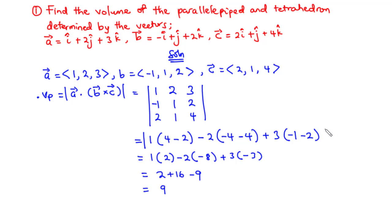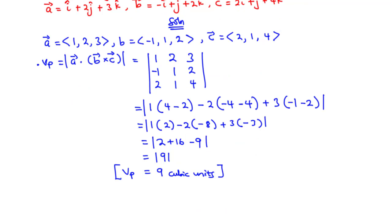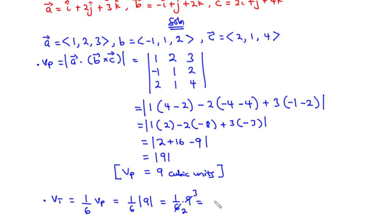The absolute value of 9 is 9, so the volume of the parallelepiped is 9 cubic units. To find the volume of the tetrahedron, that equals one-sixth of the volume of the parallelepiped: (1/6) × 9 = 3/2 cubic units. So that's it for today's video. Thanks for watching, and see you in my next video.